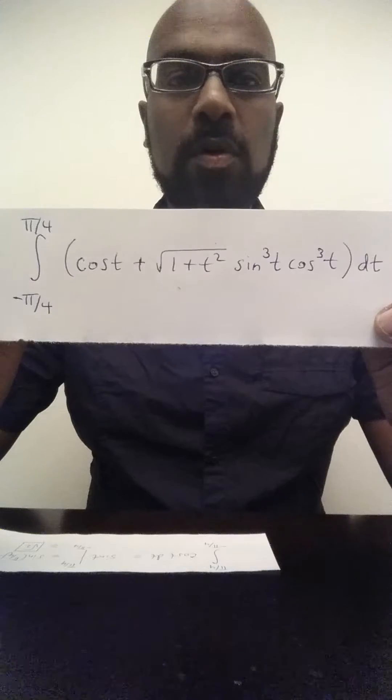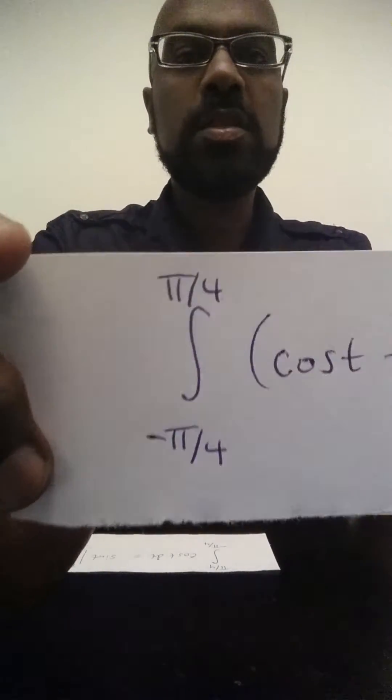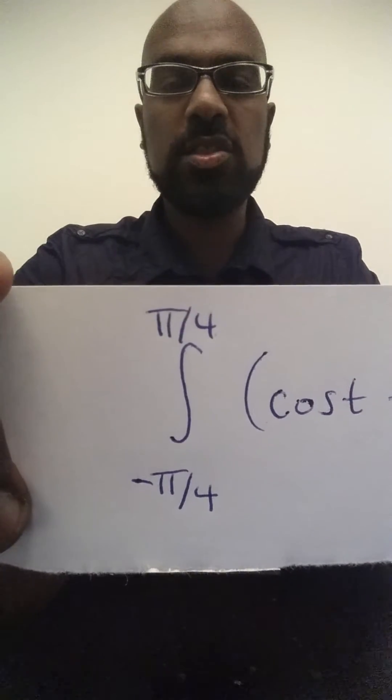There's one thing that should be alarming though about the integral in question, and that's the bounds. Notice that the bounds are negative pi over 4 and pi over 4, they're symmetric around zero.